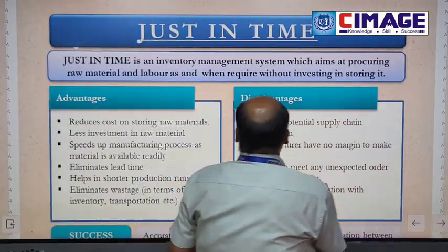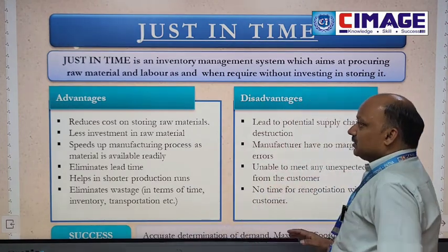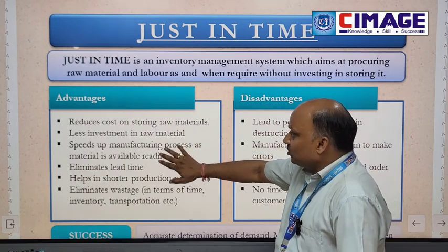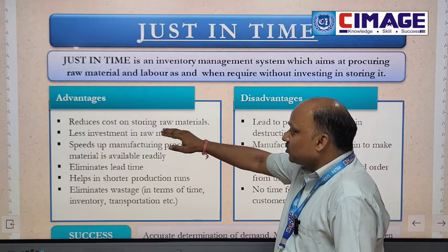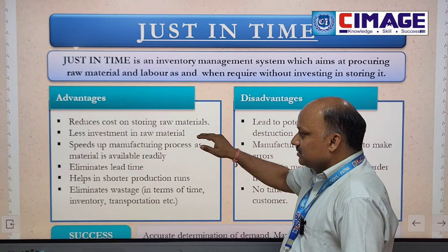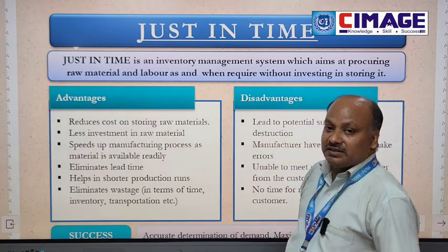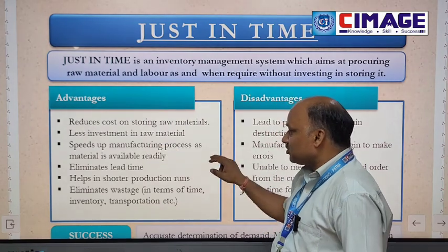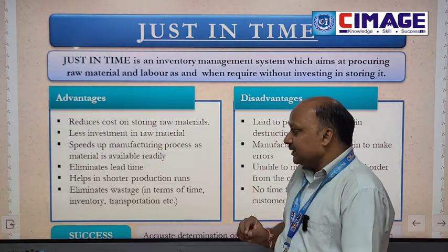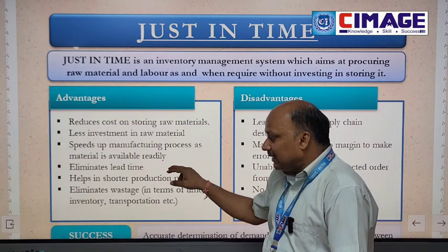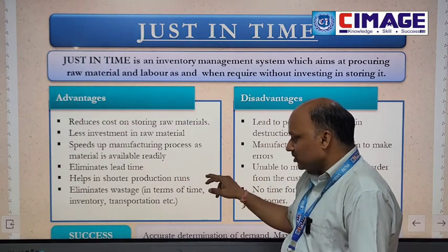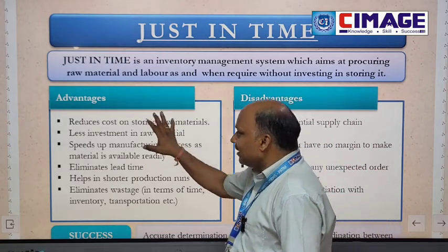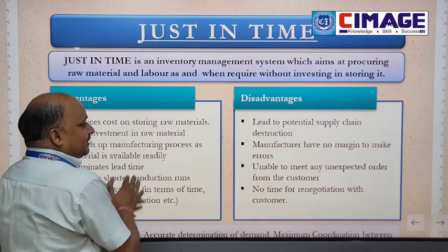The advantages of Just-in-Time are: first, it reduces cost on storing raw materials; second, less investment in raw materials; third, it speeds up the manufacturing process as materials are available readily; fourth, it eliminates lead time; and fifth, it helps in shorter production runs and eliminates wastage.